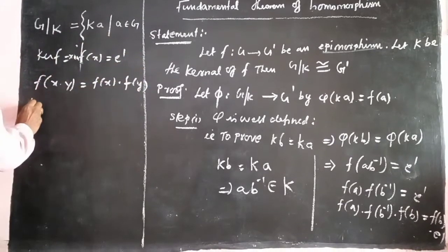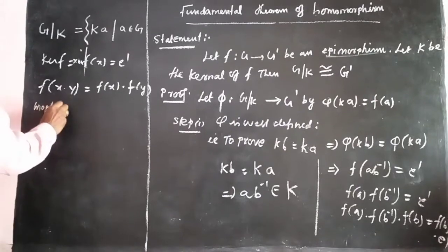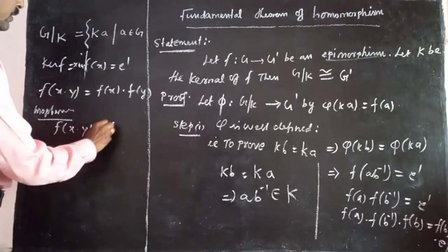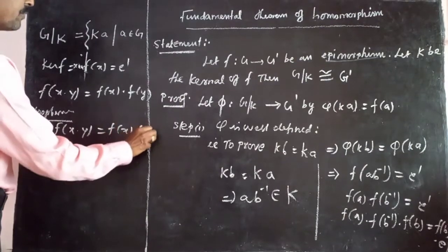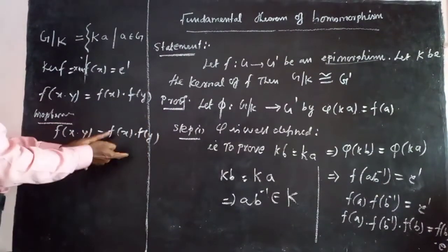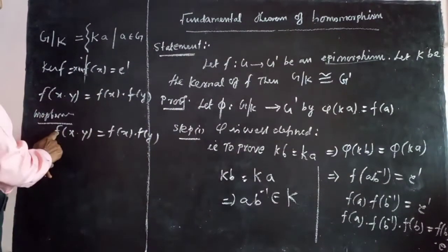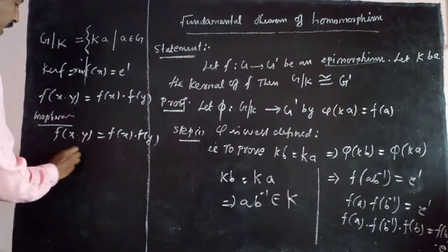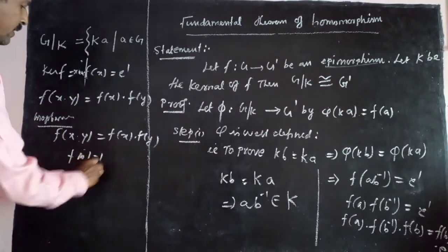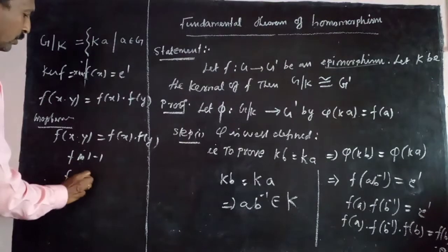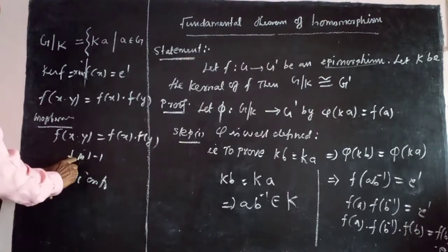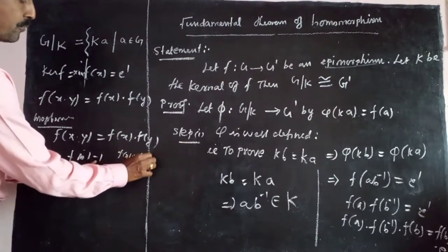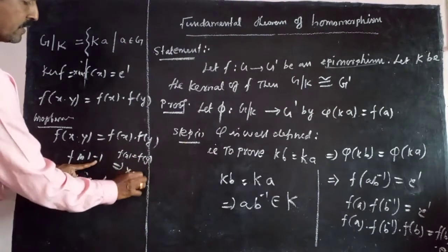Isomorphism — isomorphism means F(x·y) = F(x)·F(y), and F is one-to-one and F is onto. So F is one-to-one means: F of x equals F of y implies x equals y. This is a basic definition.